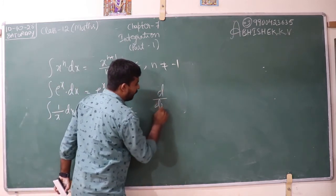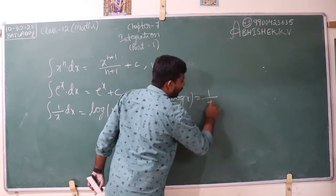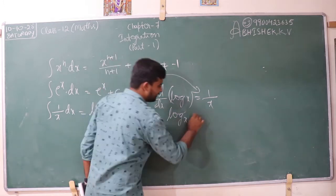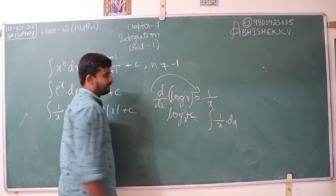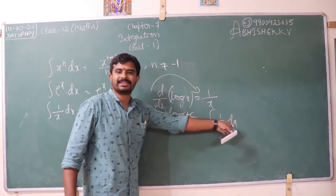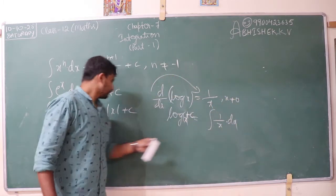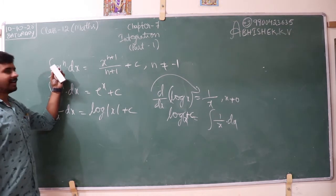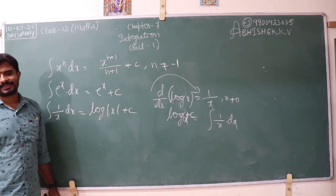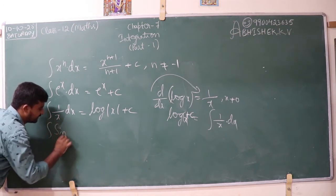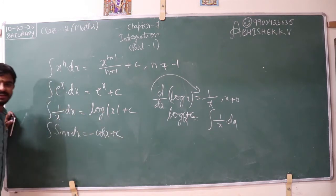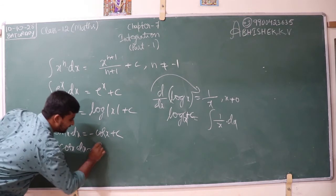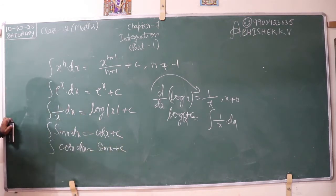Because integral of 1 by x dx is log of modulus of x plus c. Why? Because differentiation of log x is 1 by x. If I convert this differentiation to the RHS, it becomes integral of 1 by x dx plus c equals log x plus c. Note here that x should not be equal to 0. Integral of sin x dx is minus cos x plus c. Differentiation of sin x is plus cos x. What is integral of cos x? Integration of cos x is sin x. But differentiation of cos x is minus sin x — please remember this.